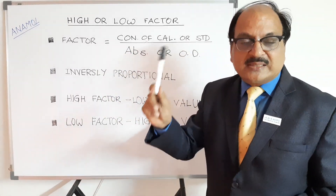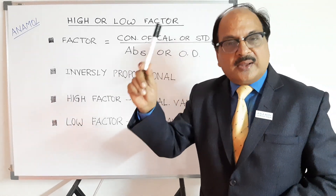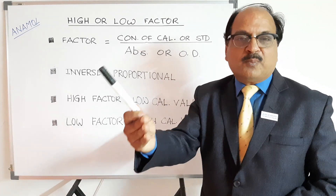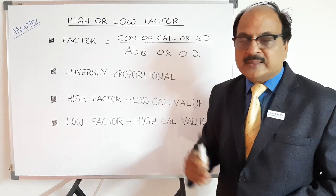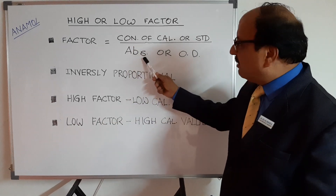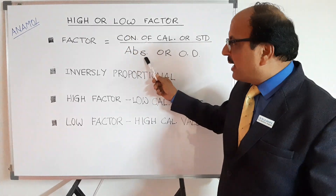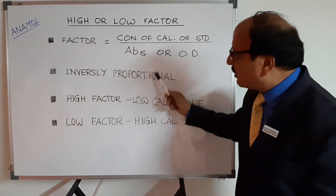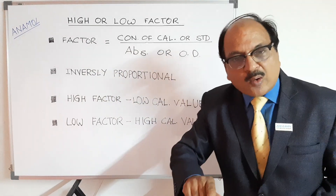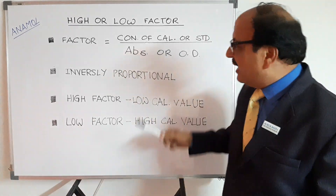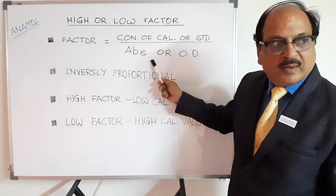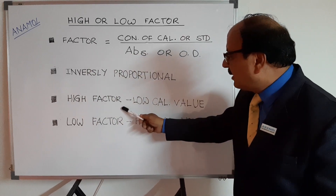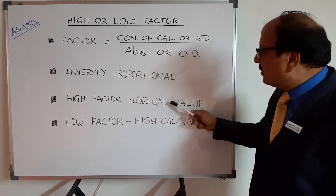Why is it so? Let's understand. Whatever is the concentration of your calibrator will give you a proportional optical density once the biochemical reaction is completed. So, whatever concentration is low, your OD will be low; concentration is high, OD will be high. And this will give you a factor which is inversely proportional to the absorbance. Now the important issue: if your absorbance is low — which is in the denominator — the factor will be high.